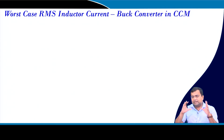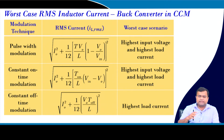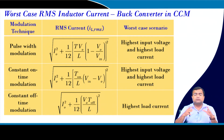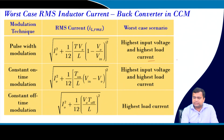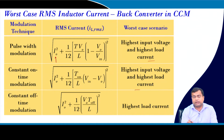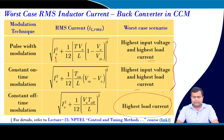The worst-case inductor current in CCM is the RMS current, which is the square root of average inductor current squared plus ripple current squared divided by 12. Since load current is included, worst-case RMS is highest at both highest load current and highest input voltage. Under constant off-time it is insensitive to input voltage, as discussed in lecture 23.